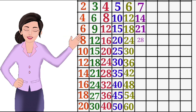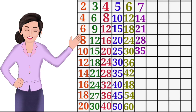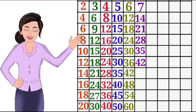7 4s are 28, 7 5s are 35, 7 6s are 42, 7 7s are 49.